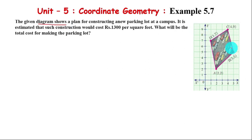So the diagram has four vertices for the parking lot. The cost is Rs. 1300 per square feet, so we need to calculate the total area and multiply by the rate to get the result.